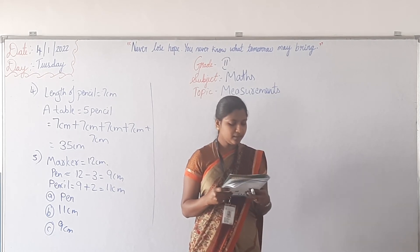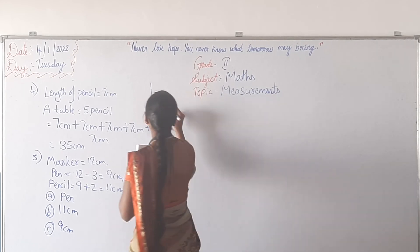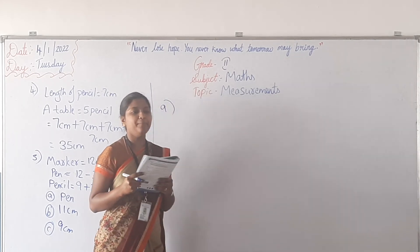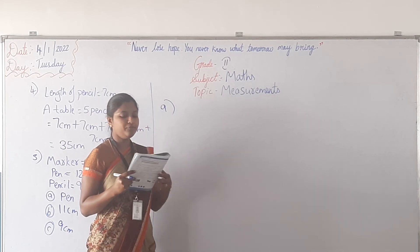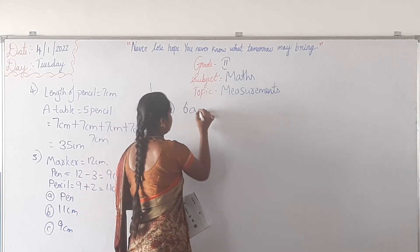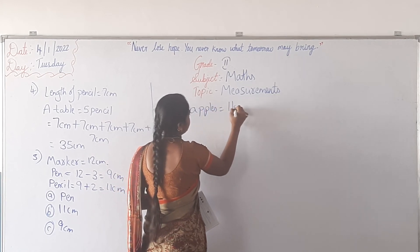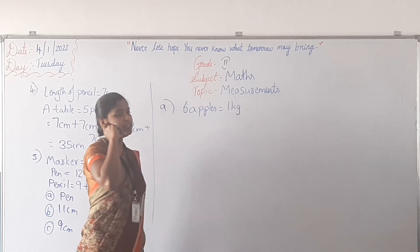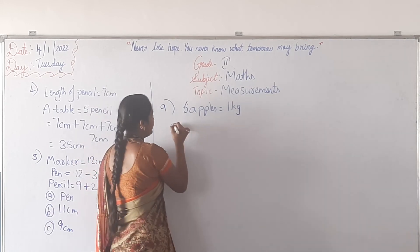See the ninth question. The weight of 6 apples is 1 kg. What is the weight of 12 apples? So what is the weight of 6 apples? 1 kg. The question asks for the weight of 12 apples.